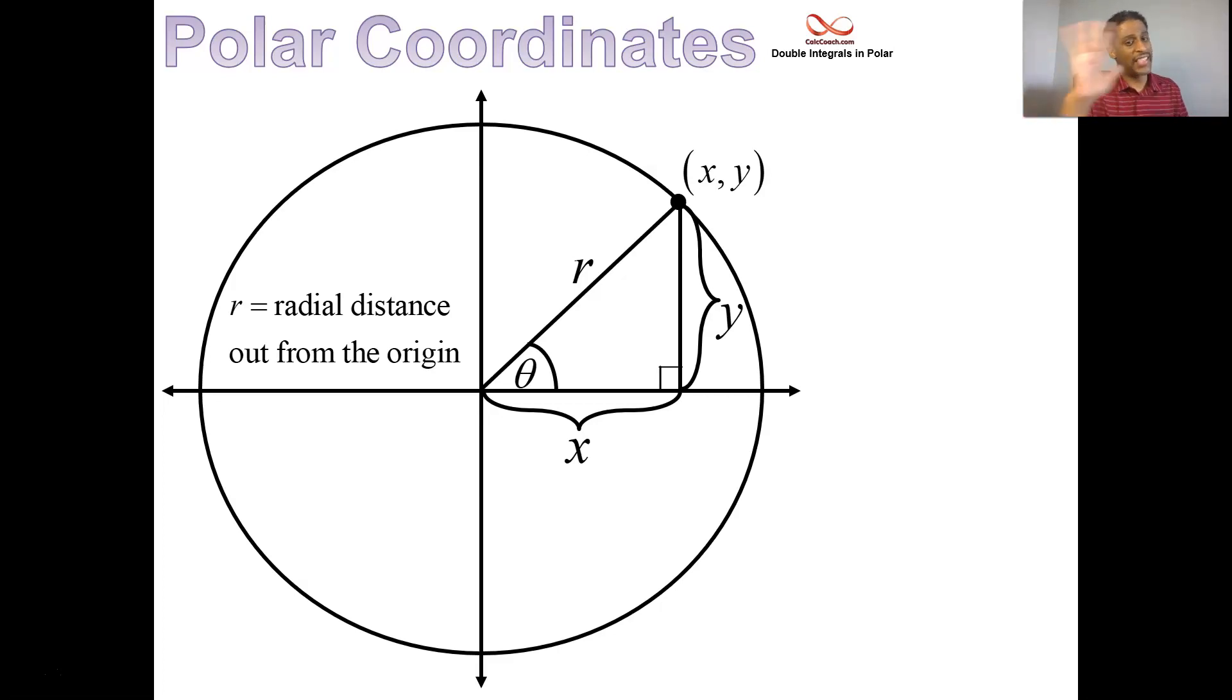That angle we're going to call theta. So theta is the angle that's made by the point, by the radius that goes from the origin out to that point and with the positive X axis. So your new point won't have the same coordinates. Your new point, instead of being called XY, is going to be called R theta.